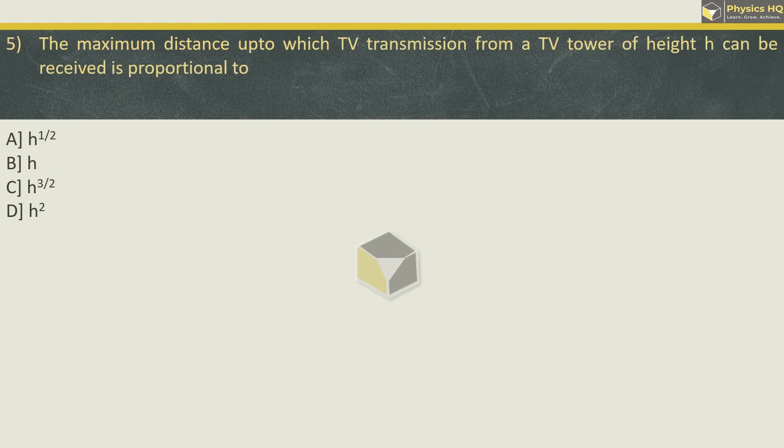Next, the maximum distance up to which TV transmission from a tower of height h can be received is proportional to - so the maximum distance formula is d = √(2rh), where r is the radius of earth and h is the height of the tower. So if you see here, d is directly proportional to h raised to half, meaning root of h. So correct option is option A.